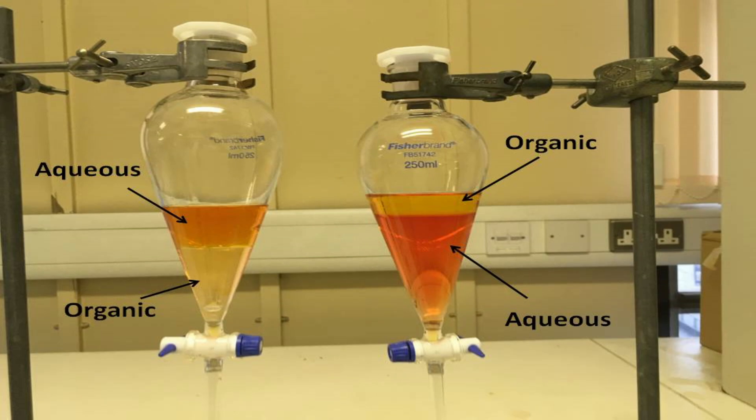For example, the separating funnel on the right has the orange aqueous phase on the bottom, and the yellow organic phase on the top, because here ethyl ethanoate has been added to our aqueous solution of water. The density of water is 1 gram per centimetre cubed, but ethyl ethanoate, our organic phase, has a smaller density of 0.9 grams per centimetre cubed, and hence the organic phase forms the top layer.